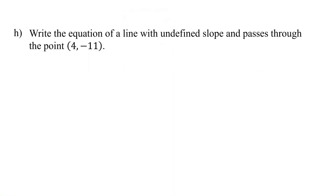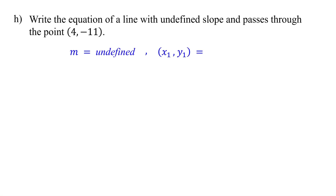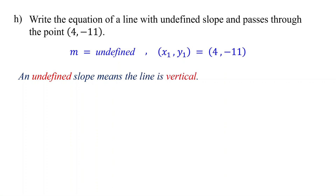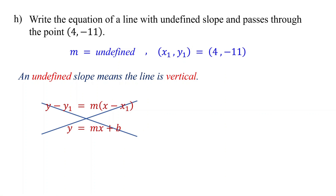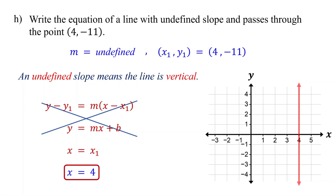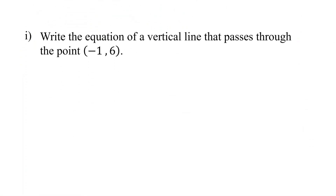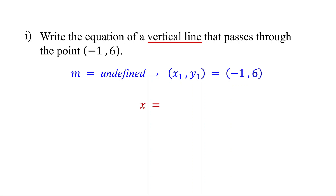What if the slope is undefined? An undefined slope means the line is vertical. You can't write vertical lines in point-slope form or slope-intercept form. Instead, the equation is written as x equals the x-coordinate of the given point. For example, with x-coordinate 4, the equation is x equals 4 — a vertical line crossing the x-axis at 4. Similarly, a vertical line through (negative 1, 6) gives x equals negative 1.